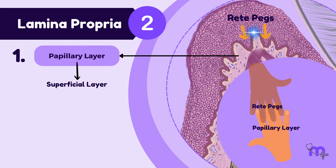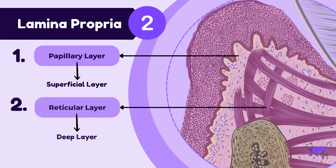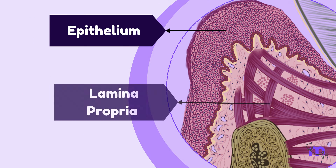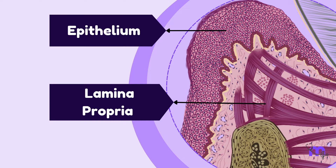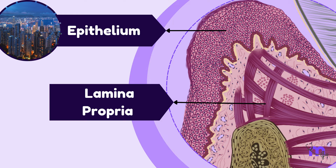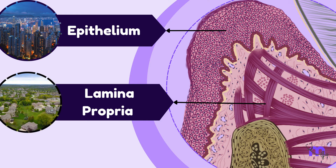It's like a gentle handshake between layers. Below this, there's the deep reticular layer, which is connected to the alveolar bone. Unlike the epithelium, the lamina propria is not as crowded with busy cities of cells, but is more of a serene landscape with its own residents.